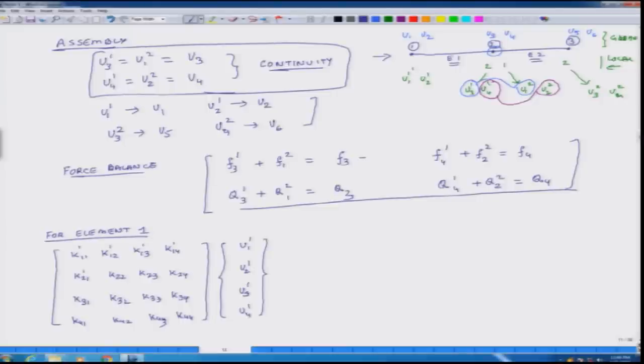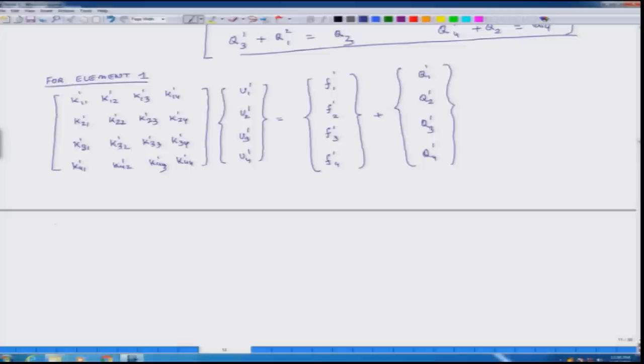So all these relate to element 1. So I have a superscript 1 here and these are my generalized displacements which is the U vector and then I have force vector corresponding to the first element plus point forces and moments. So these are the equations for the first element, at the risk of sounding very repetitive, but it is important.